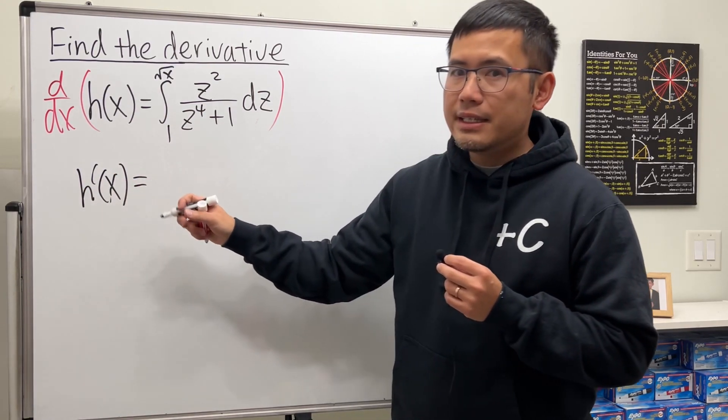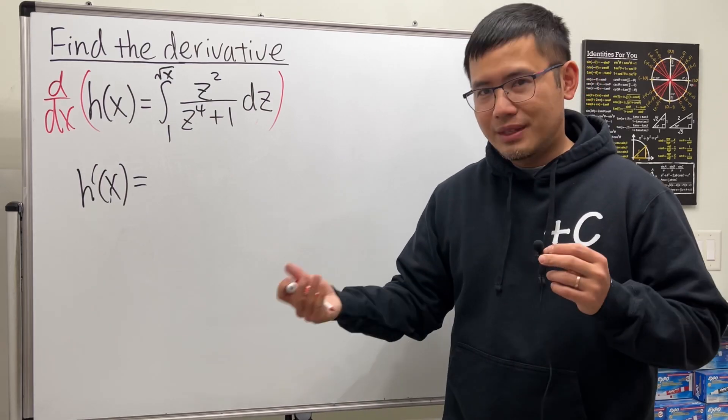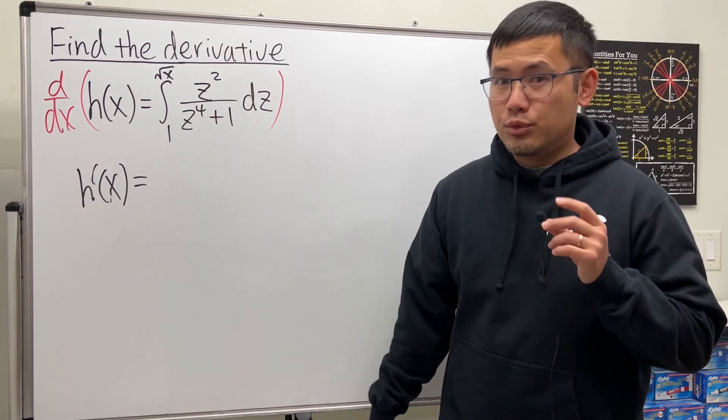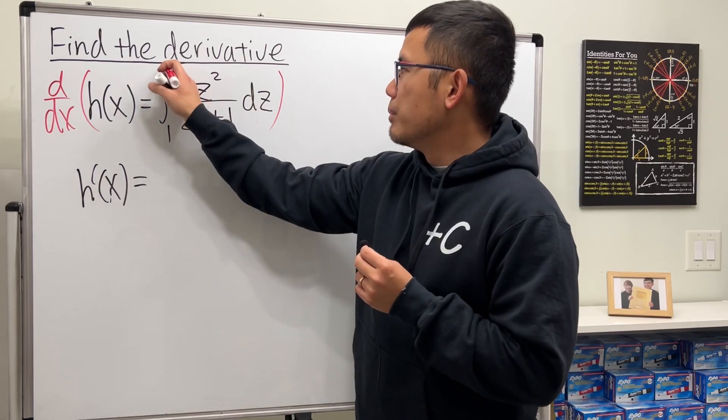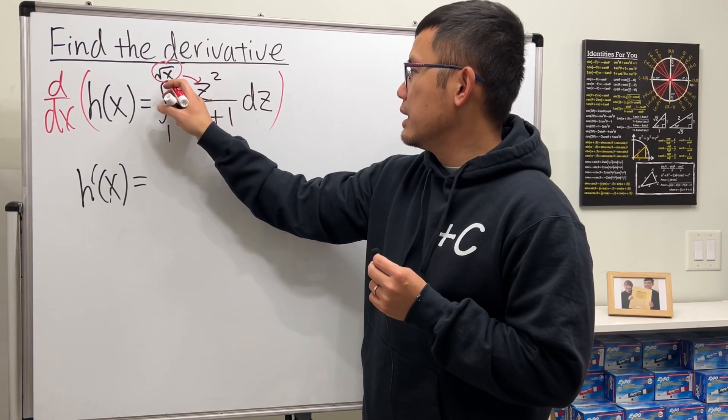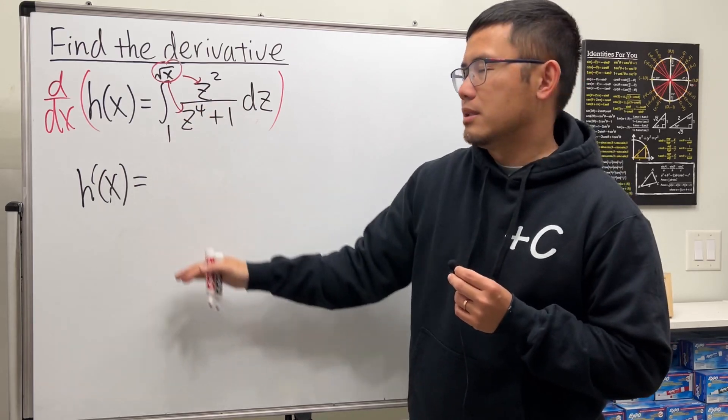But on the right-hand side, derivative of an integral function, so that's the fundamental theorem of calculus, part 1. And remember the chain rule. So put this into here and here. That's all. The 1 doesn't matter again.